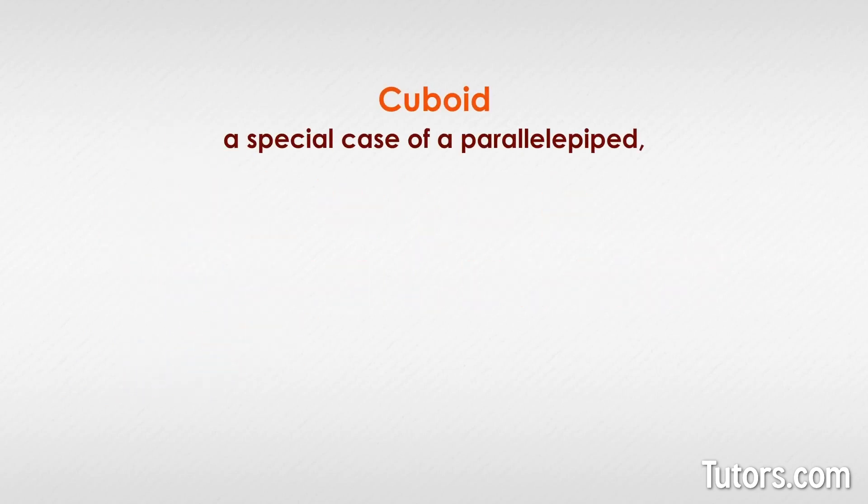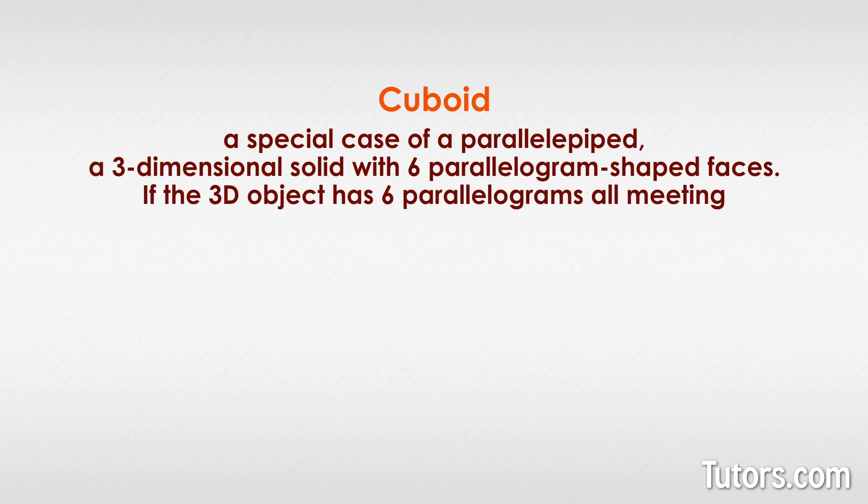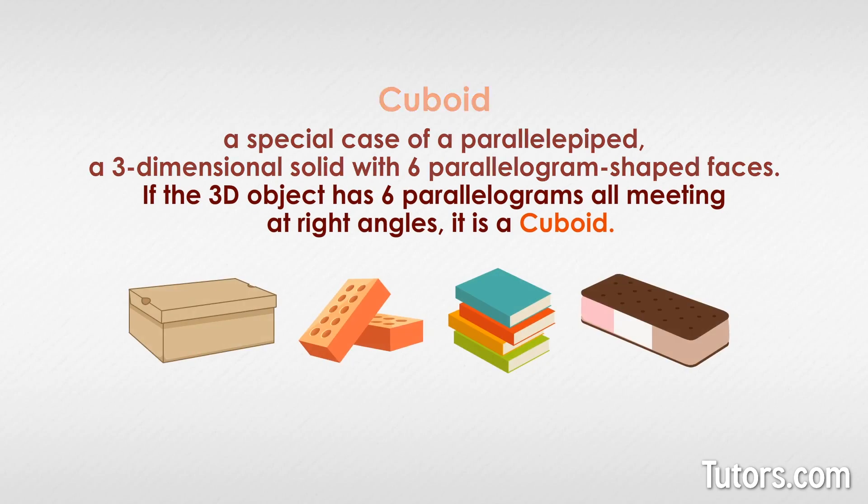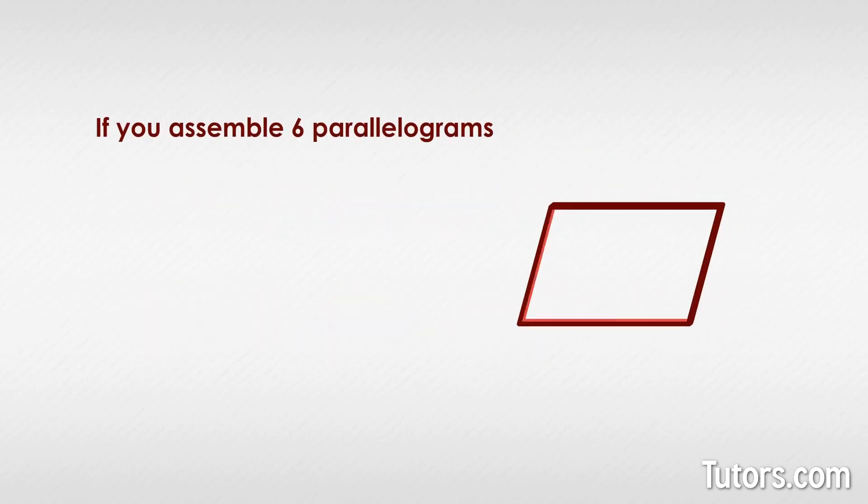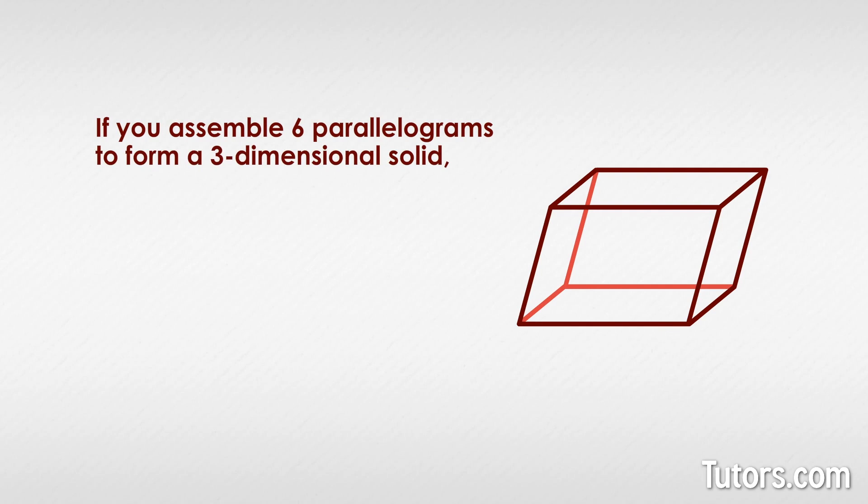A cuboid is a special case of a parallelepiped, a three-dimensional solid with six parallelogram-shaped faces. If you assemble six parallelograms to form a three-dimensional solid, you have a polyhedron called a parallelepiped.